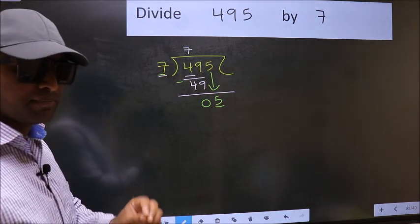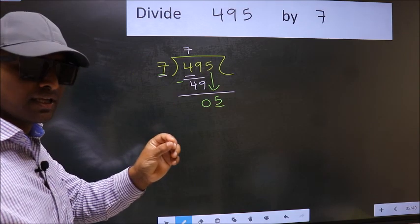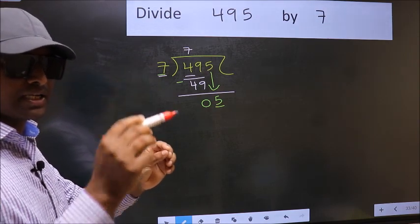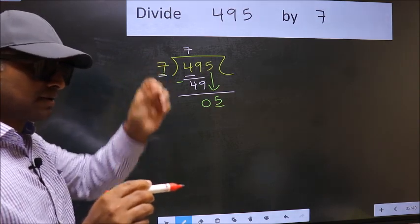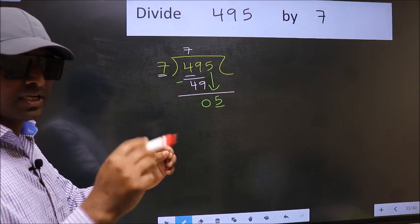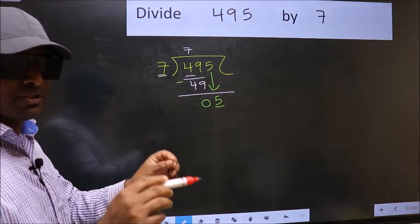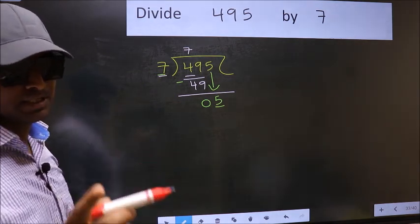Which is wrong. I repeat: bringing the number down and also putting dot and taking 0, both at the same step, you should not do.